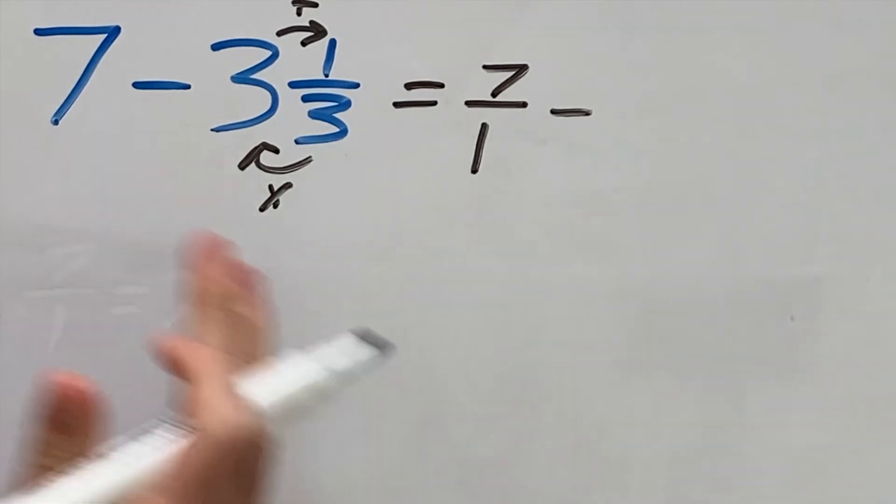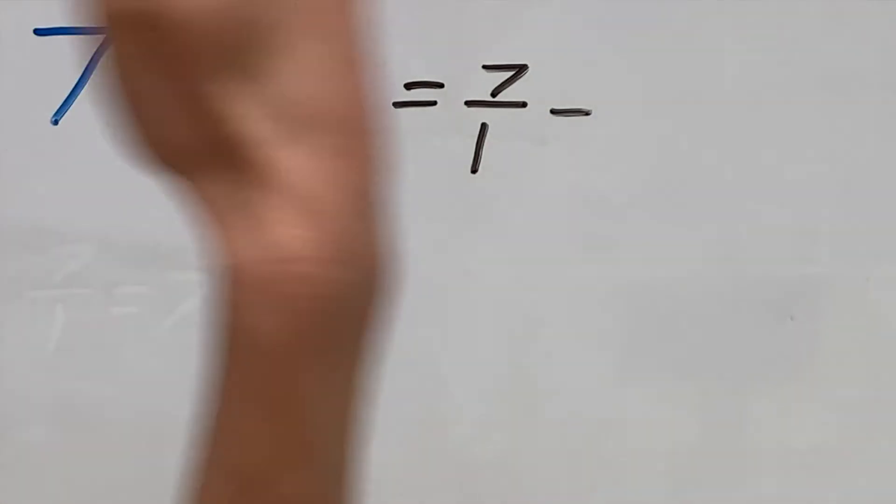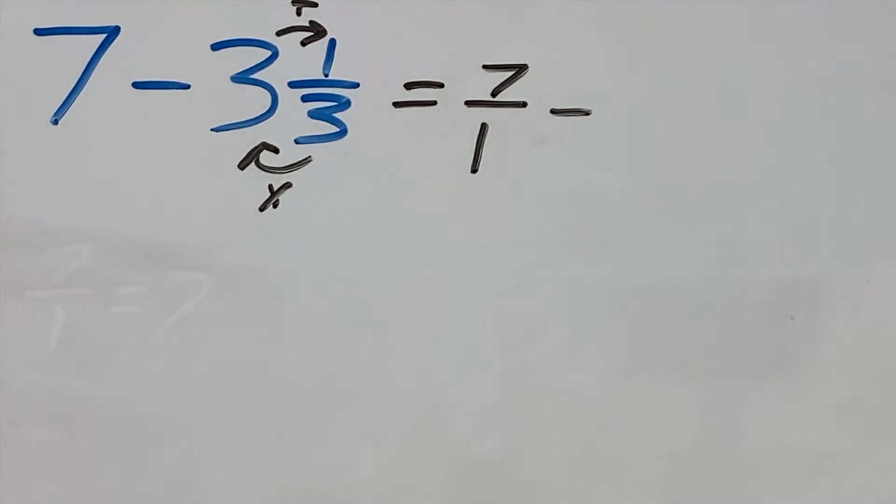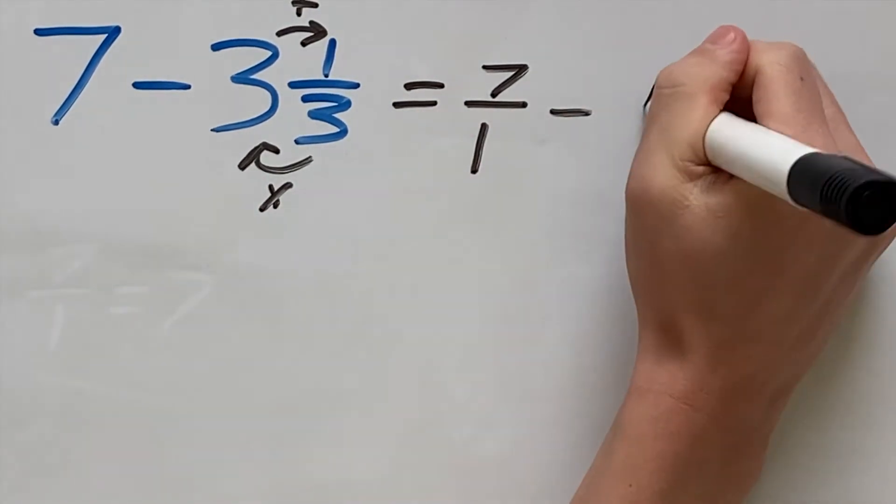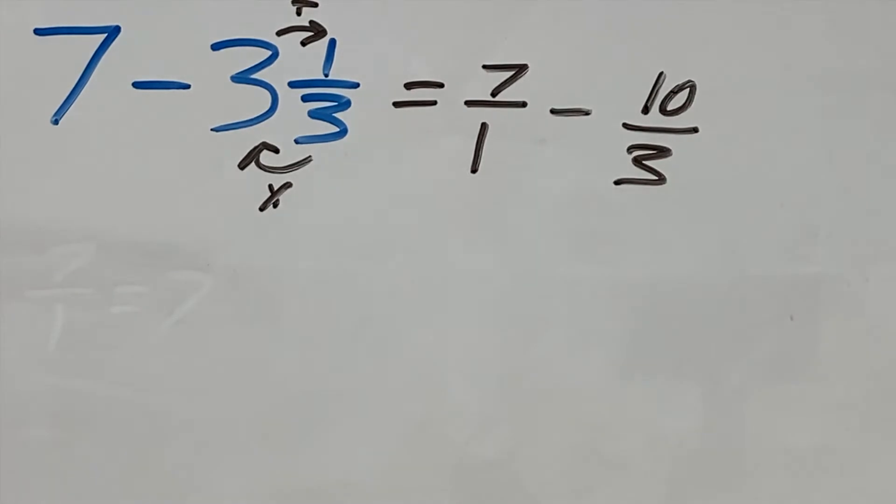We have 3 times 3 which is 9 plus our numerator which is 1. That gives us 10 and our denominator will stay as 3.